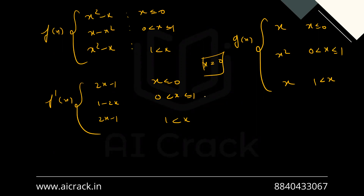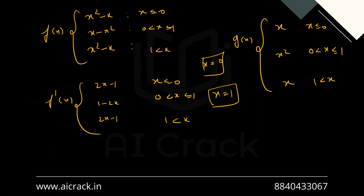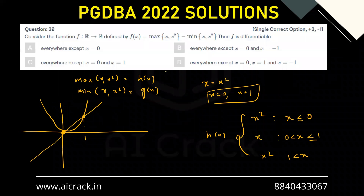At x = 1, the right-hand derivative is 1 (from the third piece) and the left-hand derivative is -1 (from the second piece). Since they are unequal, f is also non-differentiable at x = 1. Therefore, C is the correct answer.